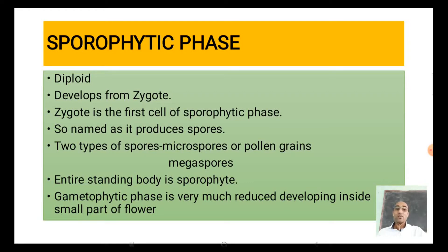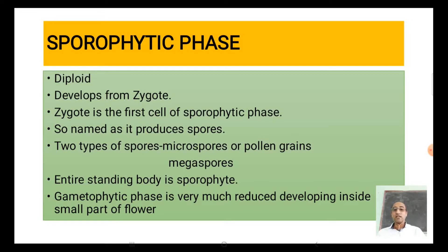Why do we call it the sporophytic phase? Because it produces spores. Two types of spores are produced in higher plants: microspores, which we generally call pollen grains, and megaspores. In the case of angiosperms, the entire standing plant body is the sporophyte, and the gametophyte is very much reduced — it develops inside a small part of a flower.